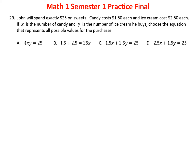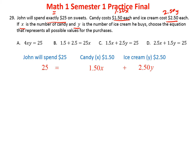Problem twenty-nine: John spends exactly $25. Candy costs $1.50 each (x candies), so that's $1.50 times x. Ice cream costs $2.50 each (y cones), so that's $2.50 times y. The equation is: 1.50x plus 2.50y equals 25. The answer is C.